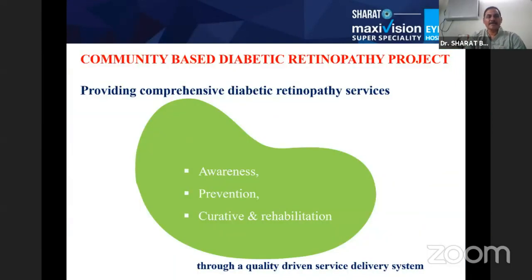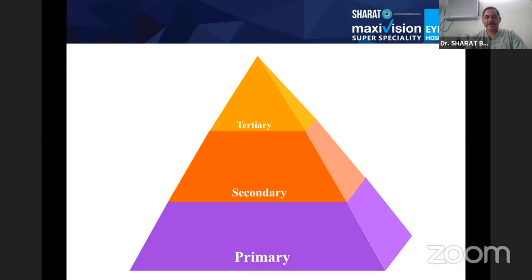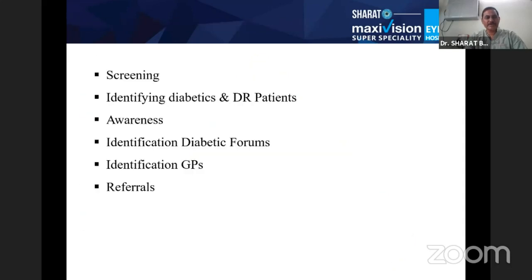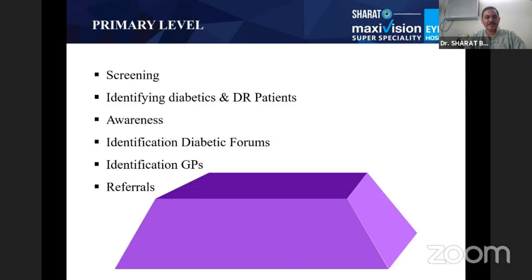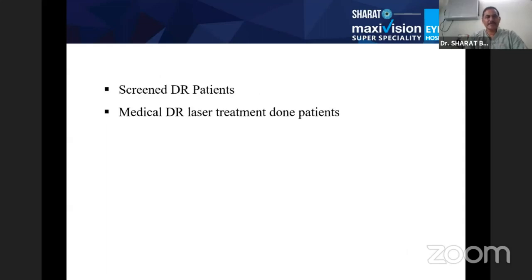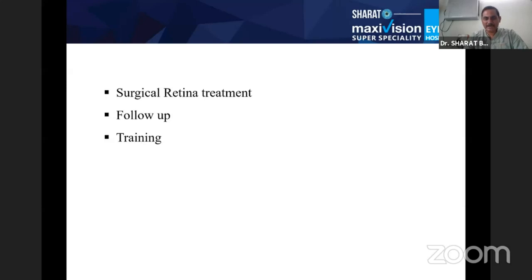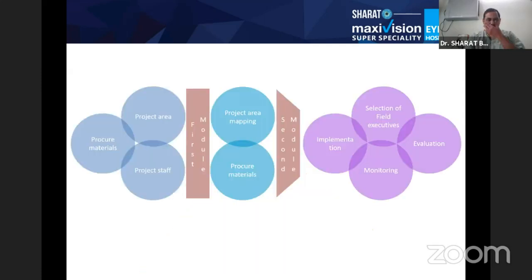We launched a community-based diabetic retinopathy program with a team of 22 people, operating at three levels. The first level involves screening and identifying diabetic patients, forming groups, and identifying local GPs for a referral system. At the secondary level, diagnosed diabetic patients undergo fundus examination, and photographs are sent to the main hospital for a retinal surgeon's opinion, with necessary patients referred to the base hospital.